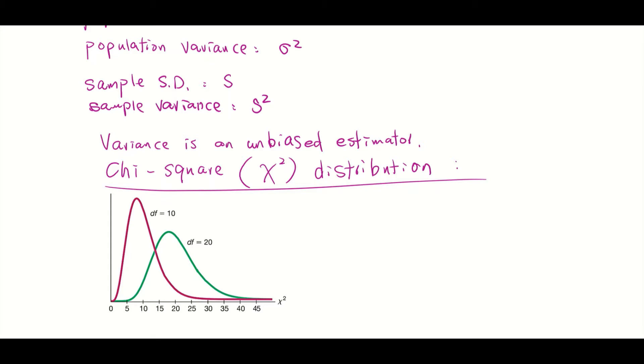In this graph, we have two chi-square distributions. One with degree of freedom equal to 10, the other one has degree of freedom equal to 20. So remember, degree of freedom is equal to sample size minus one.